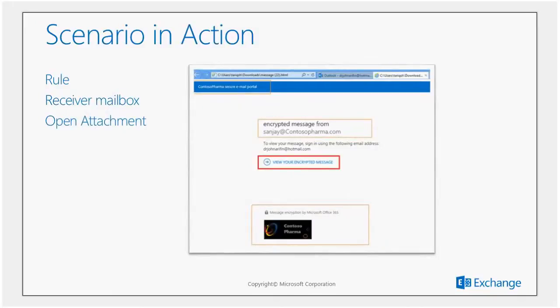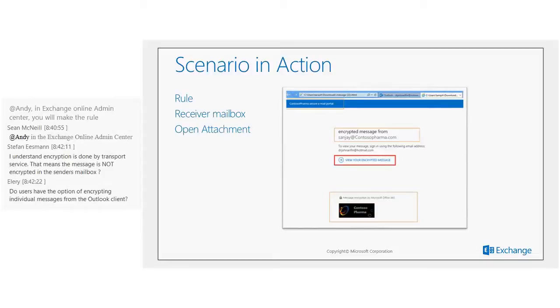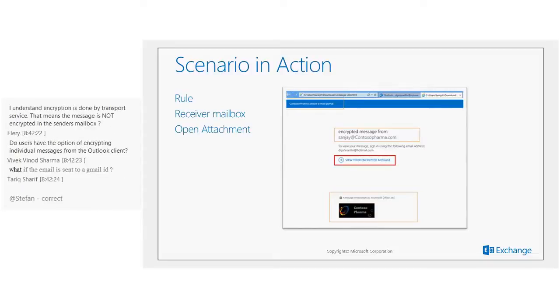When John clicks on the attachment, saves it, and opens it, he sees a page pointing to the encrypted message with a link to view it. Two notable things on this page: the Contoso Pharma secure email portal name at the top and the Contoso Pharma logo at the bottom — these are new enhancements in Office 365 Message Encryption that allow organizations to add custom branding to their messages.